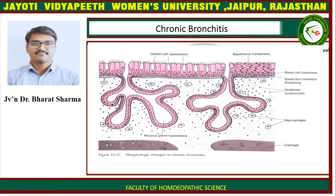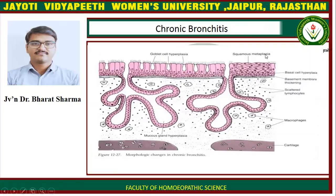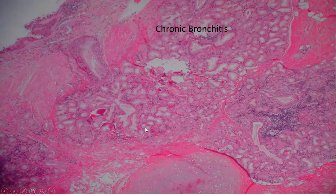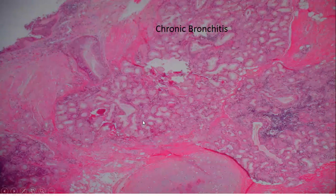Here are the morphological changes in chronic bronchitis, showing goblet cell hyperplasia with too many mucus-forming cells undergoing hyperplasia and hypertrophy.